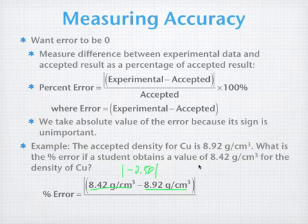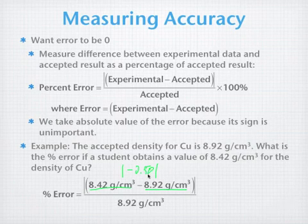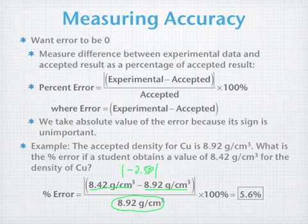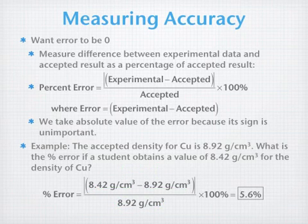Take the absolute value, so it's going to be positive 0.50. We want to divide by the accepted value. This is what you are supposed to get, or what you expect to get. And we want to multiply that by 100%, and we end up with a percent error of 5.6%. We usually want to get it within less than 5% error.